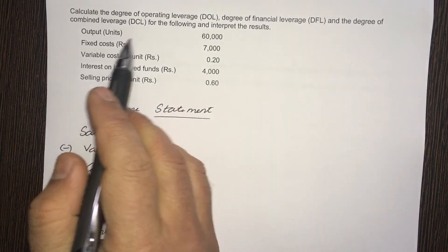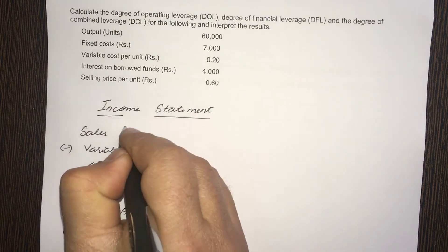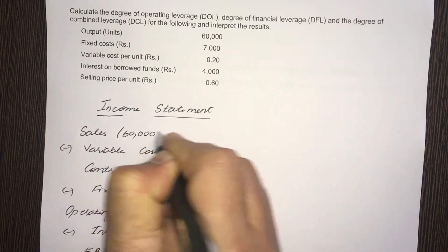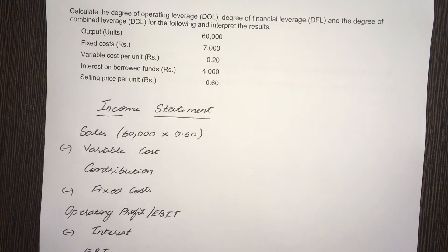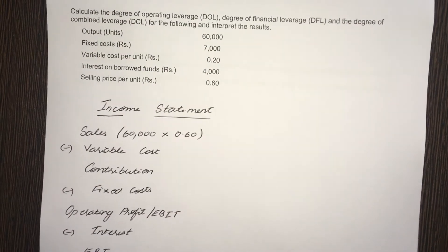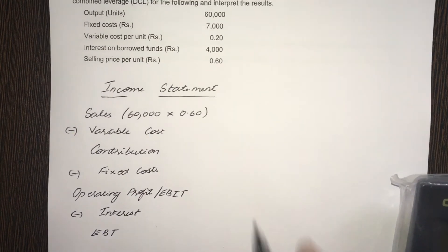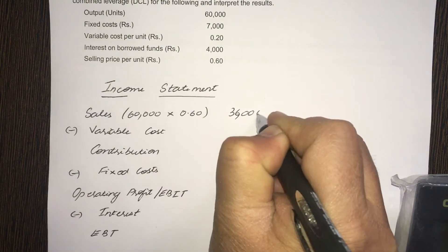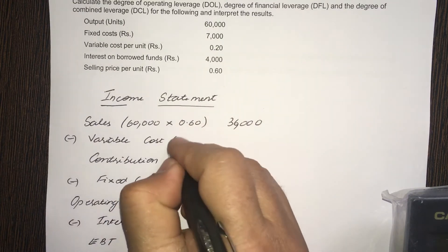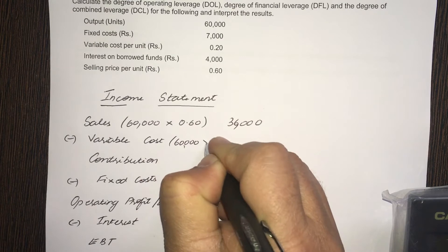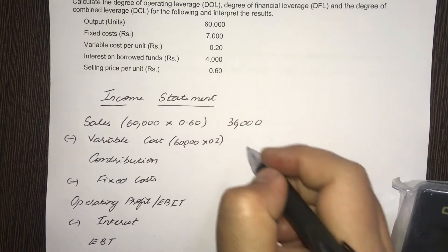Now, here, the output is given in units, 60,000 units. The selling price per unit is 0.6 rupees. So, 60,000 units times 0.6 per unit equals 36,000 minus variable cost. What is variable cost? Variable cost per unit is 0.2. So, again, 60,000 units times 0.2. That is 12,000.